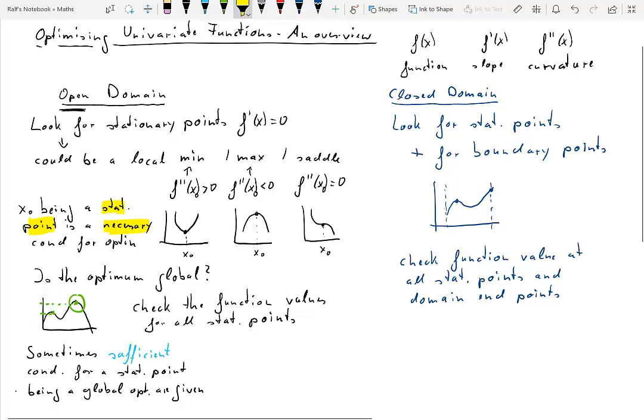That's different to the condition that an optimum has to be a stationary point. That was a necessary condition, but that was not sufficient. So you could have many stationary points, but clearly only one can be the global optimum.